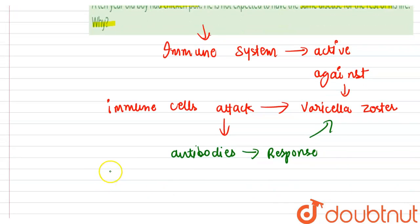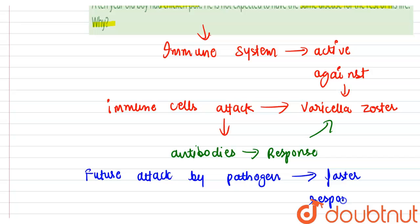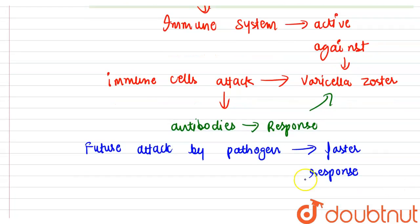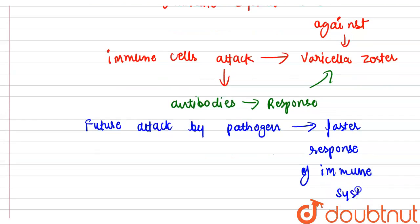For the rest of the life of the child, he does not get the disease, as any future attack by the pathogen will result in a faster response of the immune system, as the antibodies are already created in the previous exposure to the disease.